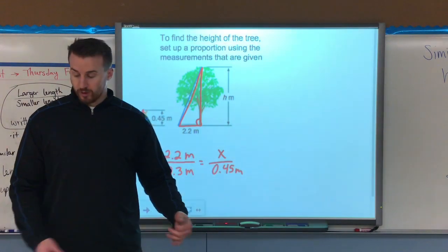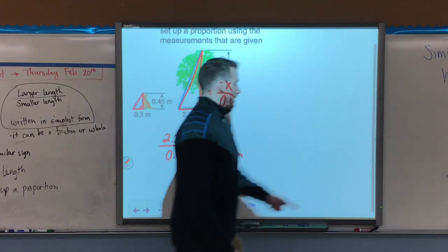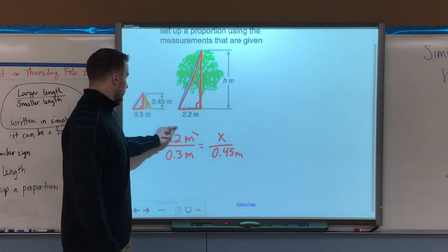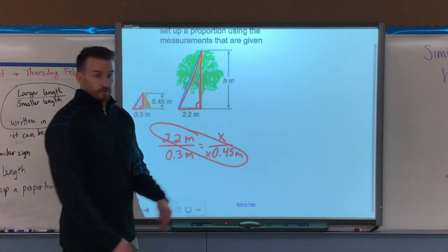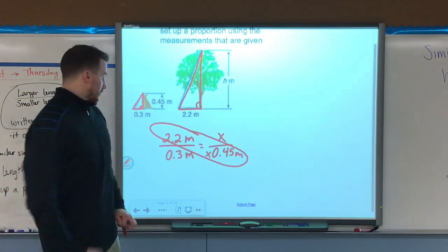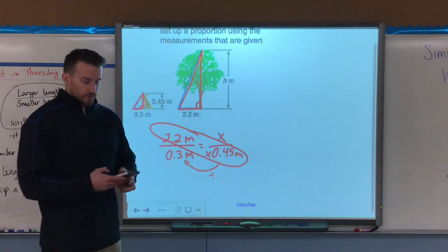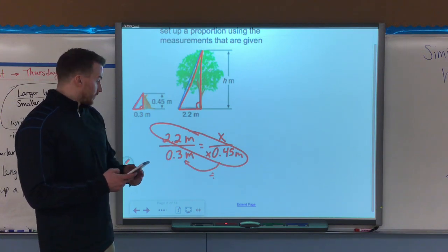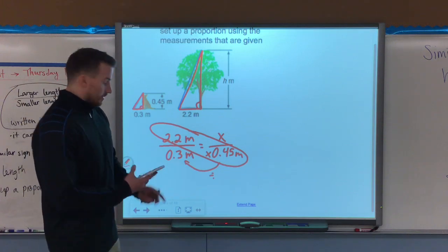There's my proportion. Now what I need to do is cross-multiply and divide to find my value. So I'm going to cross-multiply here, 2.2 times 0.45. Use your calculators, then divide that value by 0.3 tenths. So I have 2 and 2 tenths multiplied by 4,500ths, and then I divide that by my 0.3 tenths.